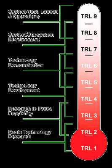Technology Readiness Levels were originally conceived at NASA in 1974 and formally defined in 1989. The original definition included seven levels, but in the 1990s NASA adopted the current nine-level scale that subsequently gained widespread acceptance.